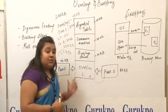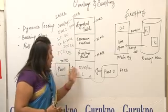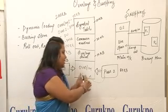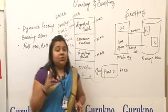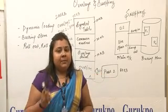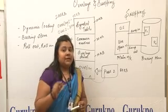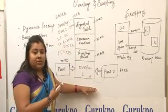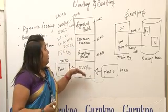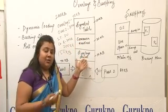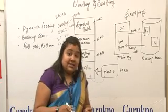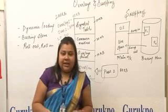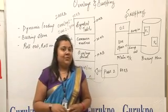In pass 1, overlay 1 comes and continues its execution. As soon as it finishes, it is overwritten by pass 2. There are two absolute images which are formed in memory. This was all about overlays. Once again: when a process is of bigger size than the memory space allocated to it, in that case, overlays are used.